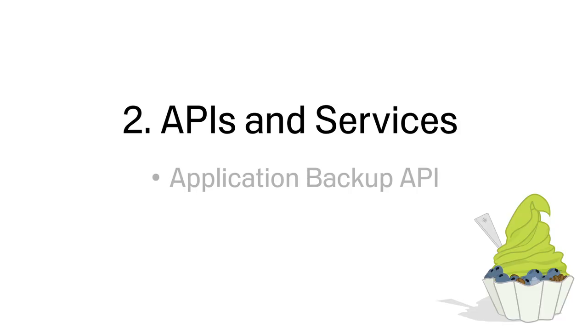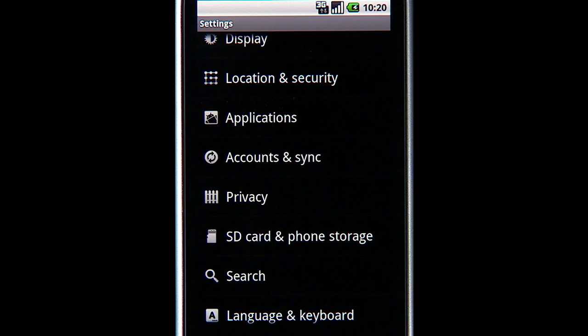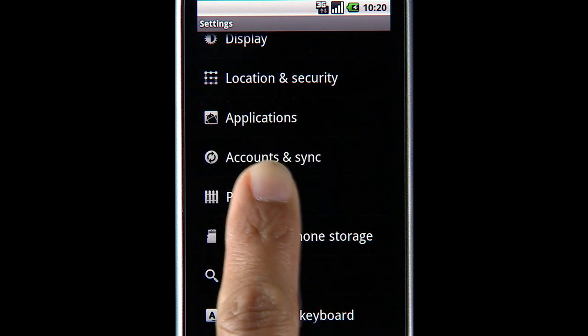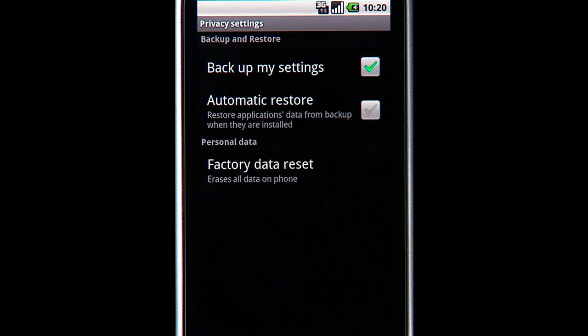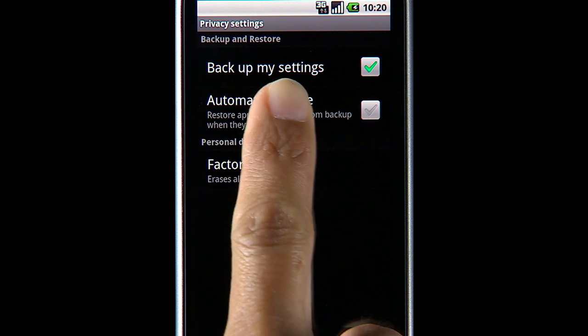The App Backup API enables any app to have its data backed up and then restored when installed on a new device. The feature is controlled by users via the Automatic Restore setting on their device.